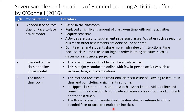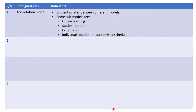The flipped classroom model could be described as a sub-model of blended face-to-face or blended online class. Now let's look at the fourth model, the rotation model. The indicators: the student rotates between different models. Sub-models within the rotation include online learning station rotation, lab rotation, individual rotation, or customized scheduling — for example, a learner taking some lectures within the classroom and at another time going to a lab in another location.